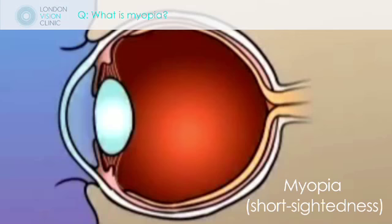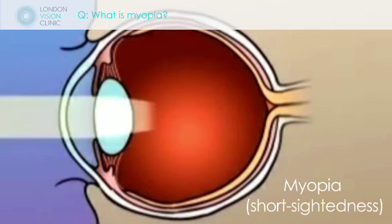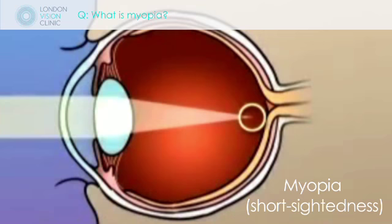Myopia is a condition whereby the refractive system of the eye is such that when light enters the eye, it's focused to a point that meets in front of the retina. And of course this creates a bit of a blur for the patient.